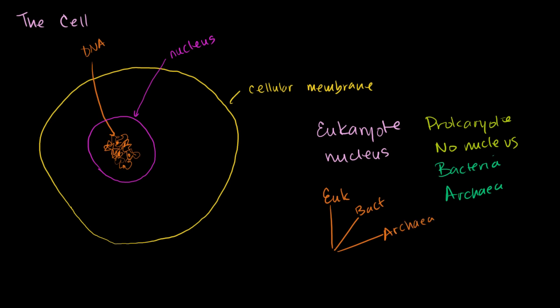If you want to say who has a nucleus—eukaryotes have a nucleus by definition. Who does not have a nucleus? Bacteria and archaea do not have nuclei.